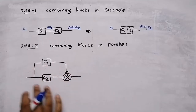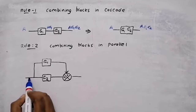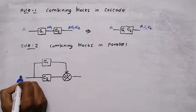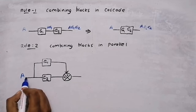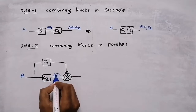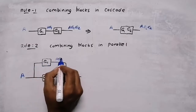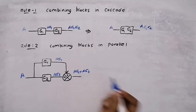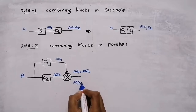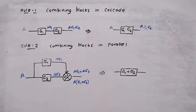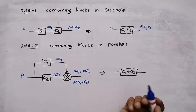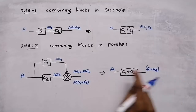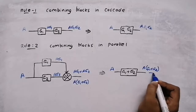If two blocks are in parallel — don't think this is feedback. Feedback is when we take output to input; this is input going to output, so this is blocks connected in parallel. Giving the same input A, the output through G2 is A·G2 and through G1 is A·G1. At the summing point both are added: A·G1 + A·G2. Since A is common, the output is A(G1 + G2). If two blocks are in parallel, add them: G1 + G2. Giving input A to the single block G1+G2 gives A·(G1+G2) — the same output.